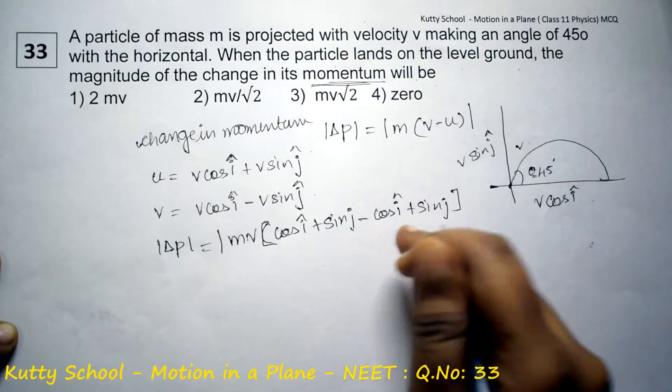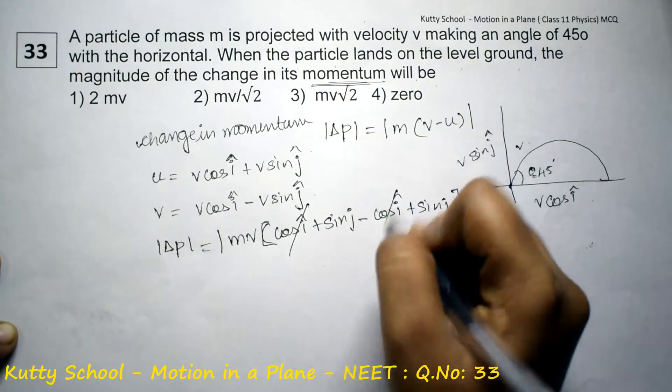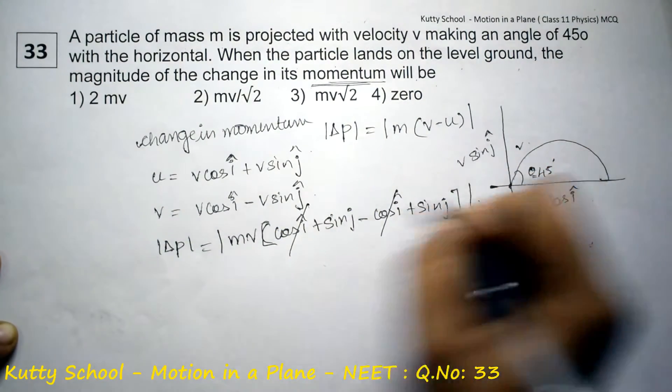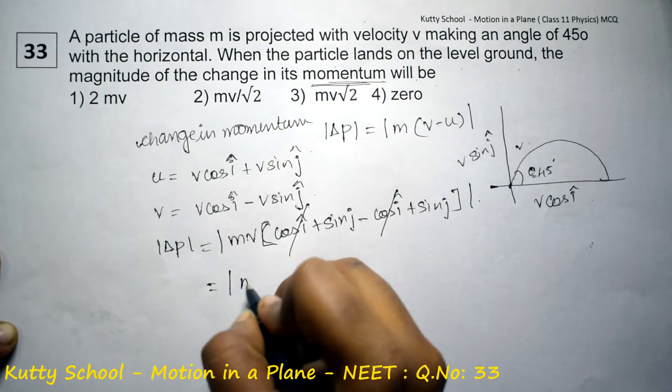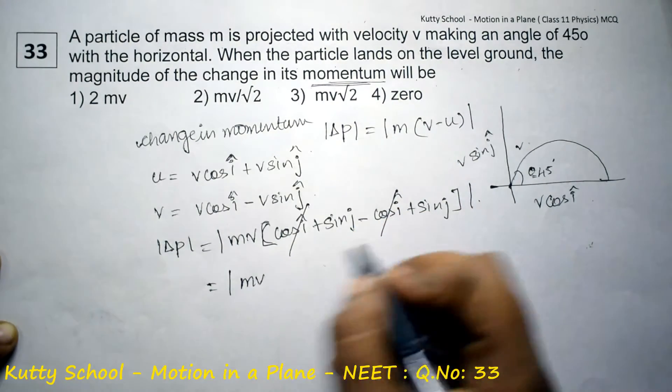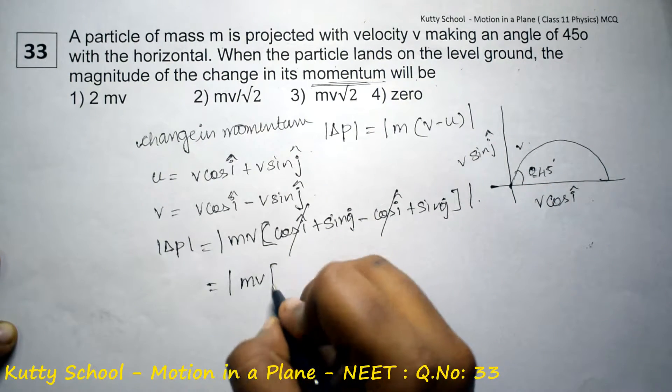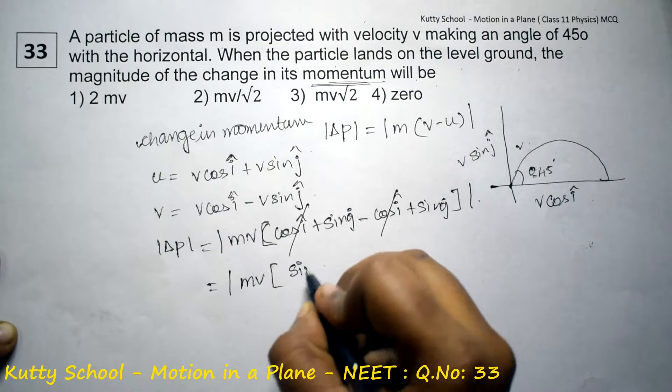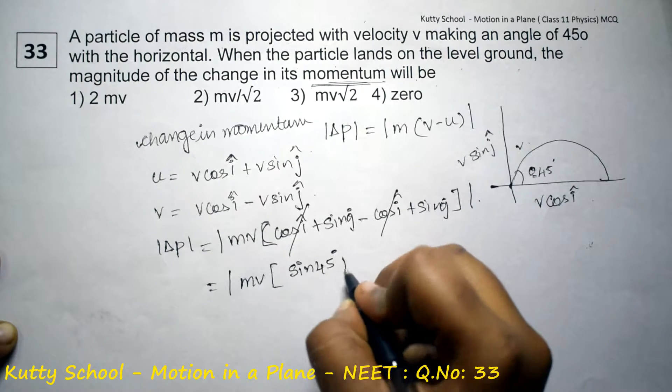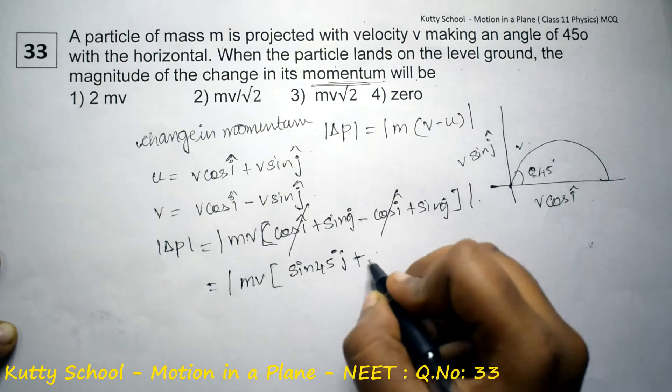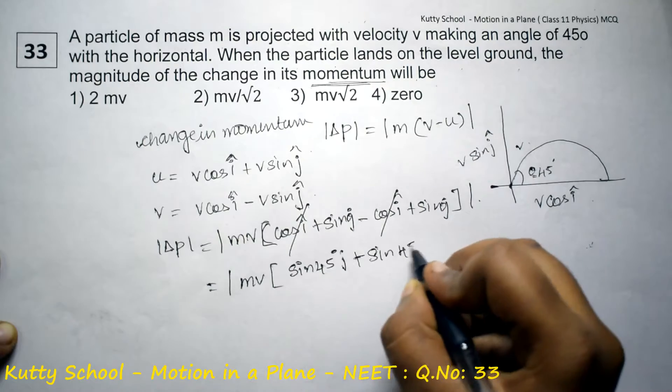That equals modulus of mv sin θ. At 45 degrees, sin 45 j minus plus sin 45 j.